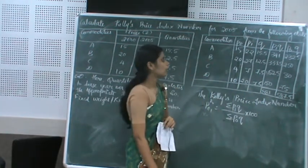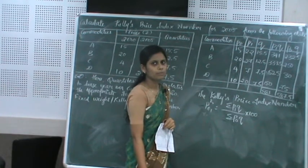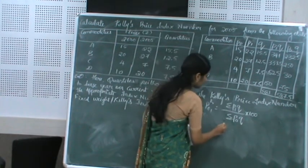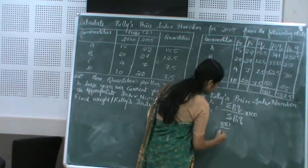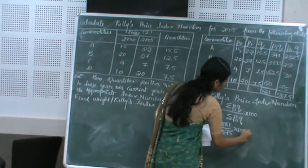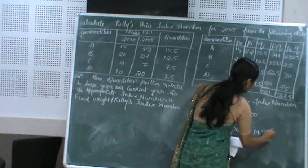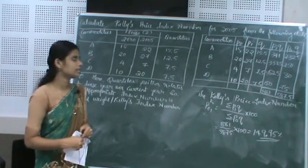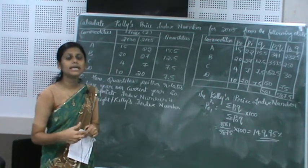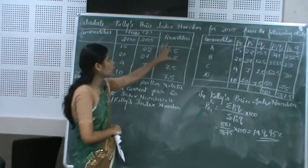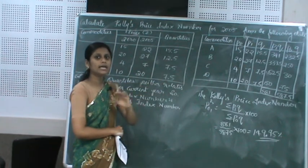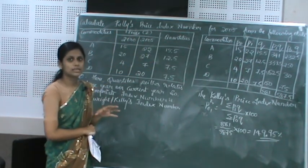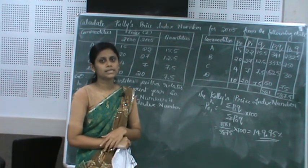Substituting the values: 881 divided by 587.5 into 100 gives 149.95. So Kelly's price index number, also called the fixed weight price index number, is 149.95. When quantities are not specified as base year or current year, we calculate Kelly's index. These are the two problems discussed in today's class, and a few more problems will be discussed in the next class.